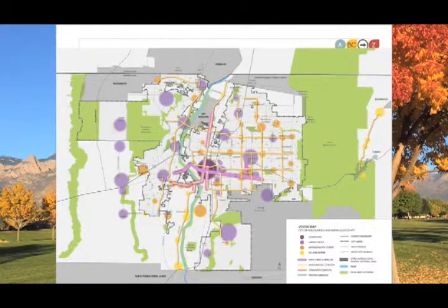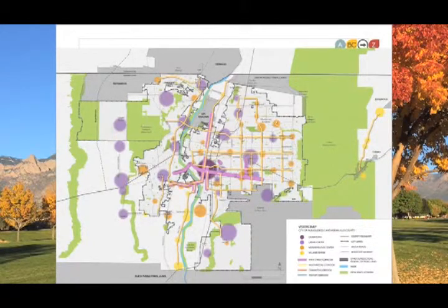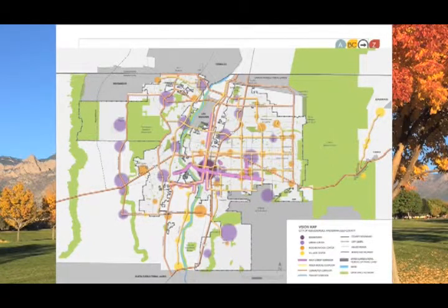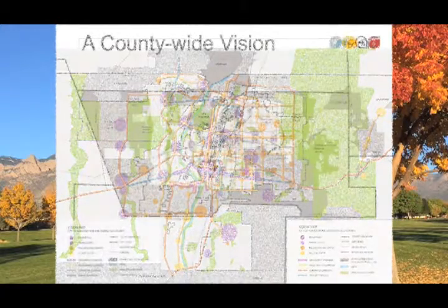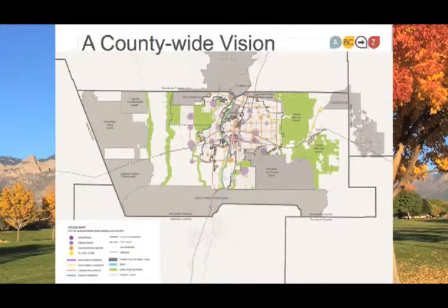Multimodal corridors are where you might expect to be able to take transit or ride a bike to get from center to center. Commuter corridors are primarily focused on being able to get from one area of the city to another by automobile quickly and efficiently. Transit corridors have been incorporated from the Metropolitan Transportation Plan for 2040 as backbone corridors for enhanced transit service. This framework of centers and corridors is the same in the city and the county.